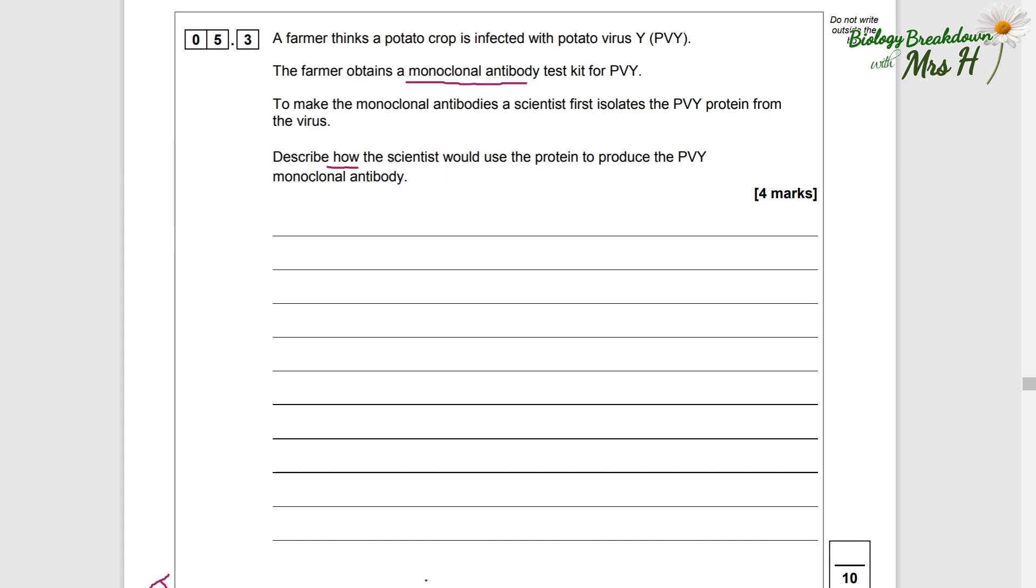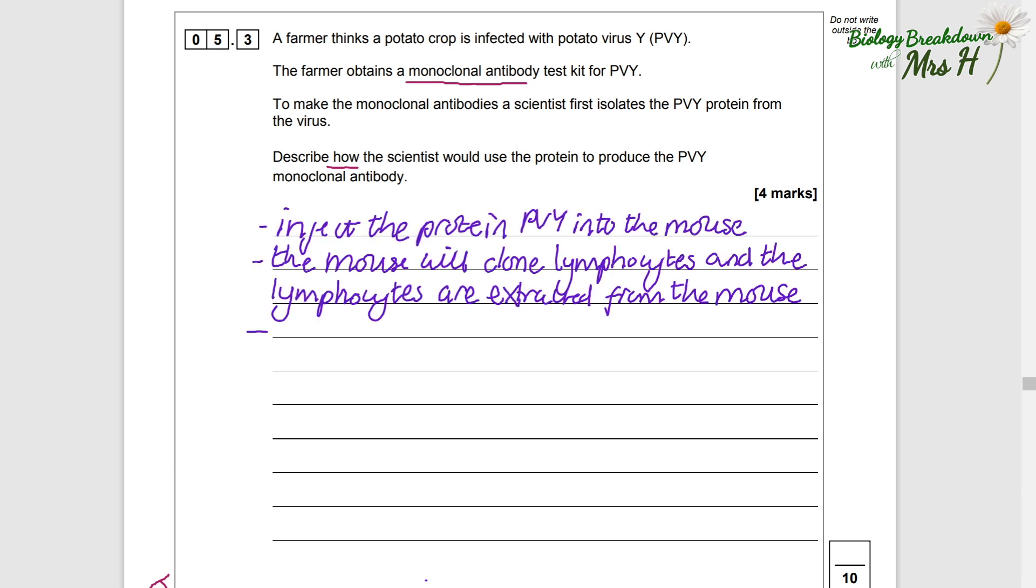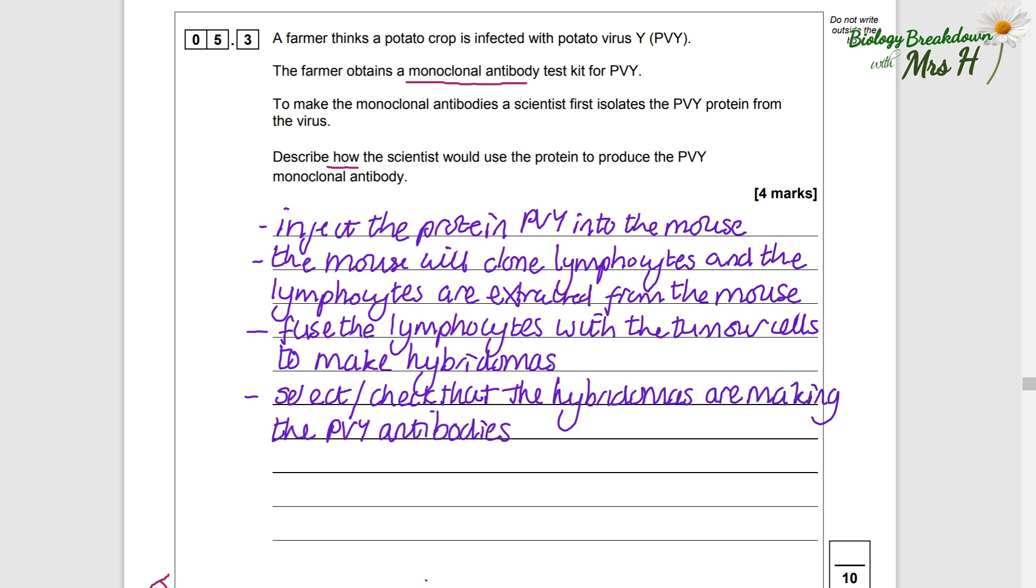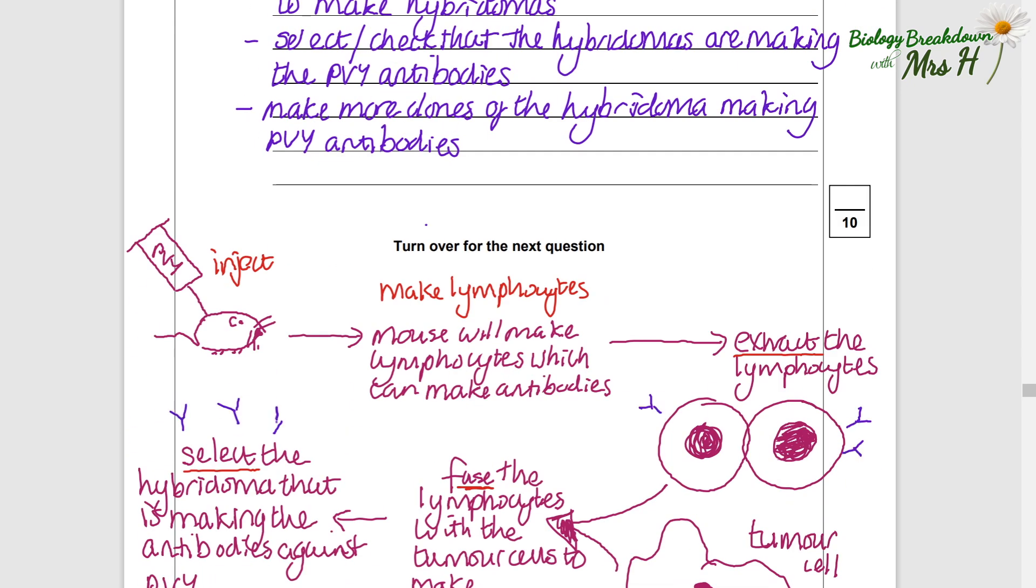Hopefully that little recap helped. Even though we've learned how to make monoclonal antibodies in the context of using a pregnancy hormone, the method is still the same. We're just using PVY instead of the pregnancy hormone. So the answer is: inject the protein into a mouse, combine the lymphocytes with tumor cells to make hybridomas, select and check that the hybridomas are making the PVY antibodies, then make more clones of the hybridoma making PVY antibodies. Some common mistakes here are: extract the antibodies from the mouse and fuse those with the tumor cell. No, you have to fuse the B lymphocyte, the lymphocyte that makes antibodies, with a tumor cell, and that is what makes the hybridoma.